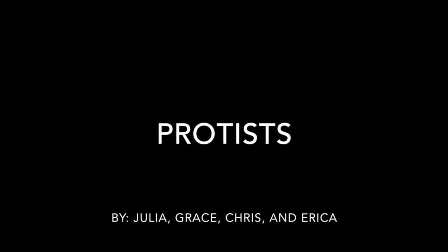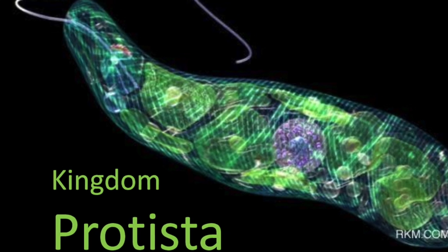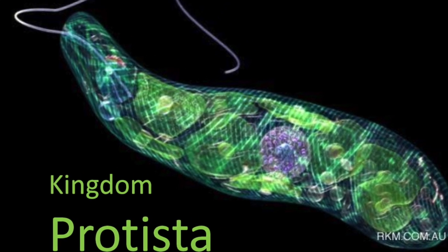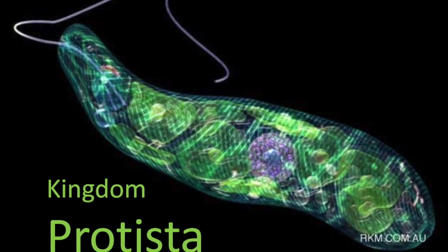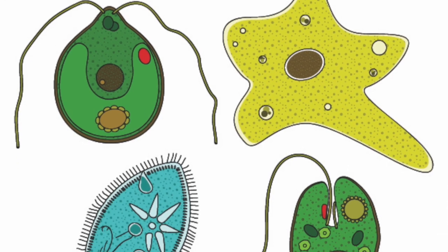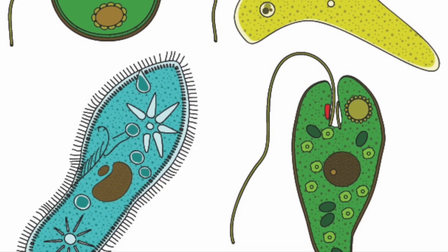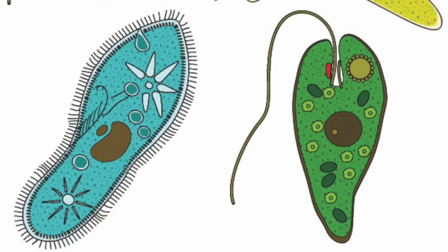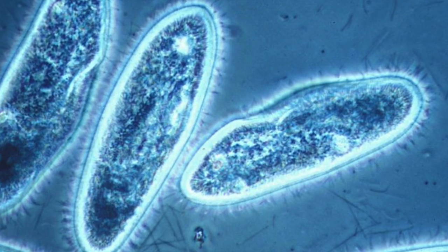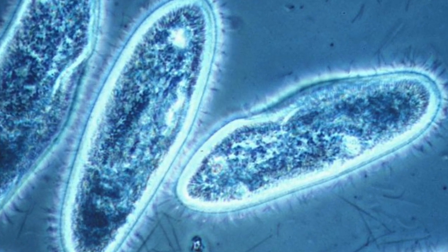Throughout the week we have observed and studied protists, specifically animal-like protists. Protists are unicellular or simple multicellular eukaryotic organisms that are not plants, fungi, or animals. Protists are classified by the characteristics that make them fungus-like, plant-like, or animal-like.